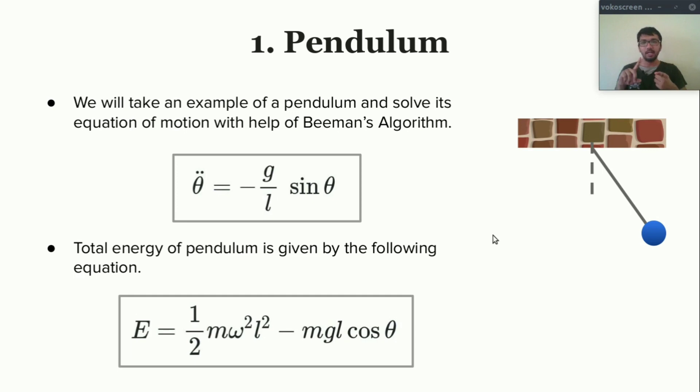There are no analytical solutions available for this differential equation, so how to compare our numerical results with the actual result? Here's the answer: we will take help of energy conservation because for a conservative system energy remains constant throughout the trajectory.